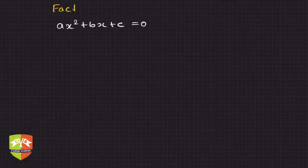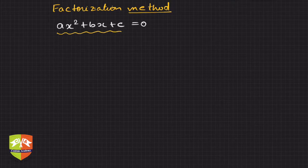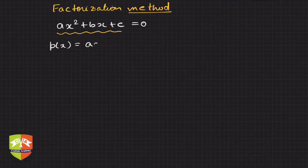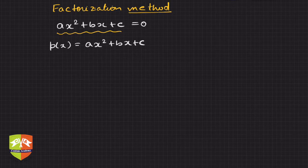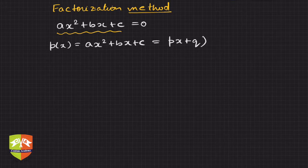In the factorization method, we are going to try to factorize the given polynomial on the left-hand side. So, if we could factorize p(x) = ax² + bx + c, we have learned many factorization techniques in previous grades. We will adopt one of them — completing the square, splitting the middle term, or using algebraic identities — whichever way you can, to convert this quadratic polynomial into two linear factors, say (px + q) and (rx + s).